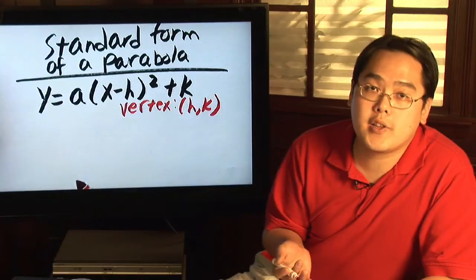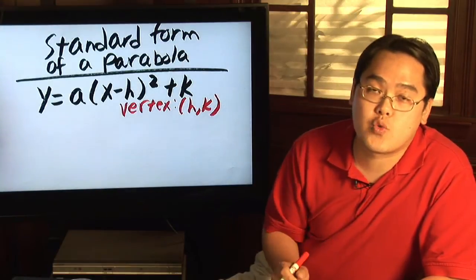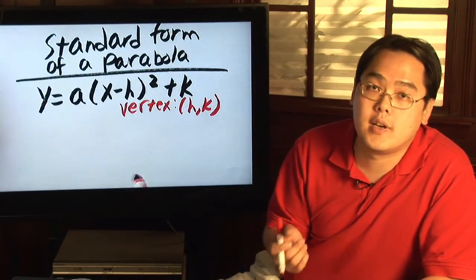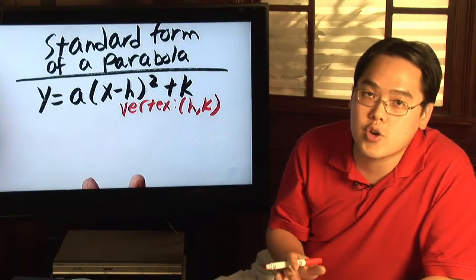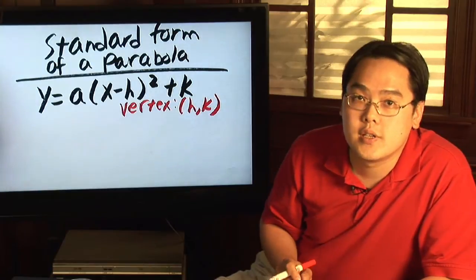Now, if you already have a polynomial that's in this form, that's great. But if you have a function that's not in that form, you have to make it so. And this is what we have to do. You have to know how to complete the square, so here we go.